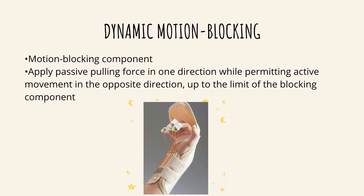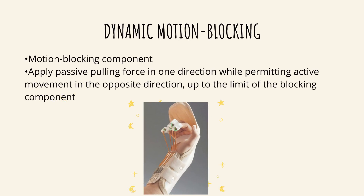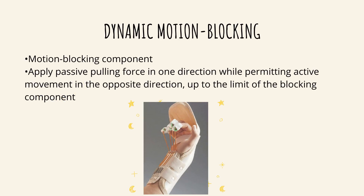The dynamic motion blocking orthosis has a motion blocking component that applies a passive pulling force in one direction while permitting active movement in the opposite direction up to the limit of the blocking component. This orthosis is commonly given to patients with tendon injuries, wherein the IP joints can extend against the resistance of the elastic thread to the limit of the extension block over the fingers.